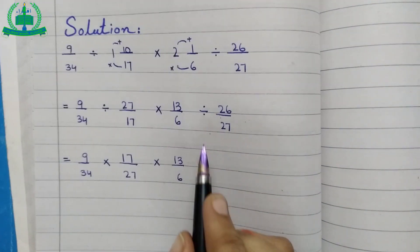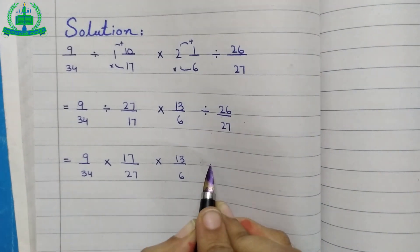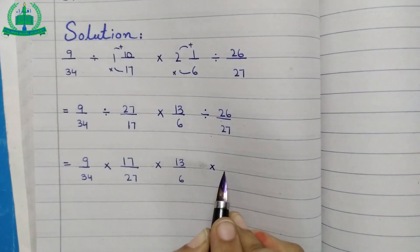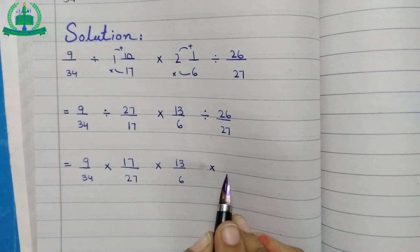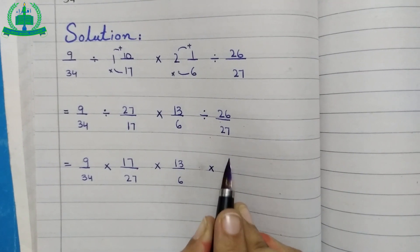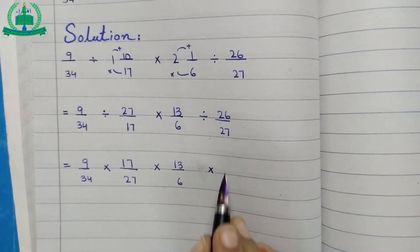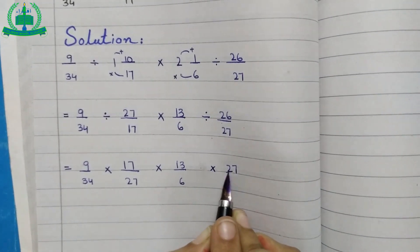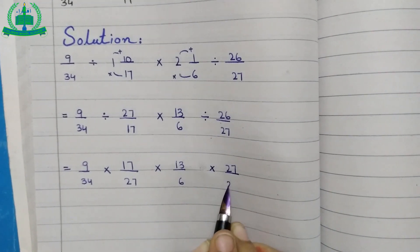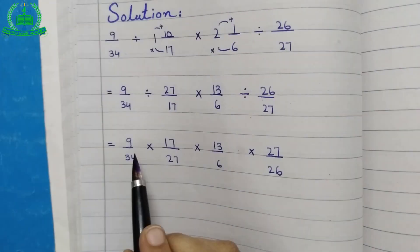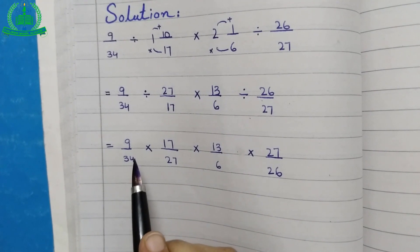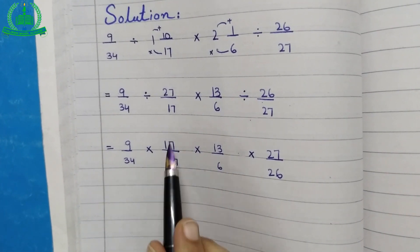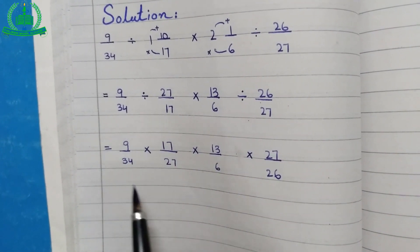Now we change division into multiplication. We take the reciprocal of 26 upon 27 — it becomes 27 upon 26. We do cross multiplication for simplification.